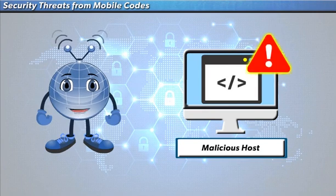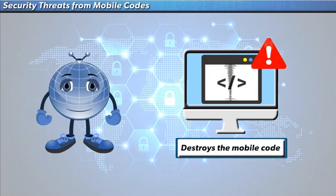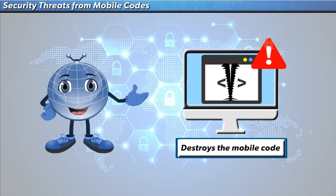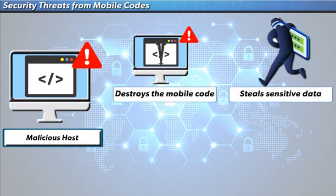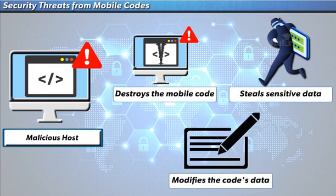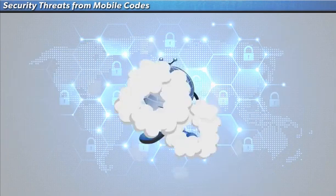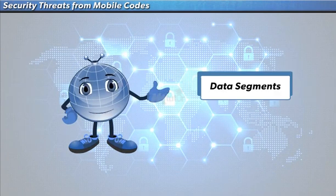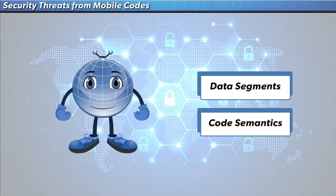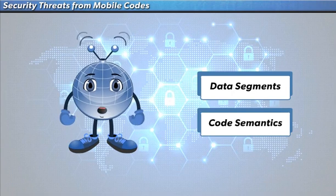The host itself might be the malicious party trying to damage the mobile code. This malicious host may destroy the mobile code and impede the function of its parent application. The host may steal sensitive information carried by the mobile code's owner, or modify the data carried by the agent for its own favor.